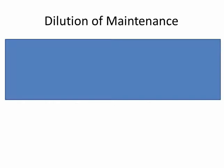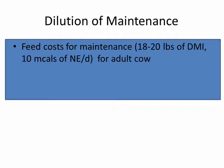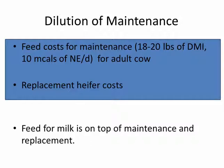What's important is this concept of dilution of maintenance costs. Every adult cow has feed costs for maintenance — 18 to 20 pounds of dry matter are essentially used to provide energy, approximately 10 Mcal of energy per day, for that adult cow just to move around and maintain herself before she produces any milk. We also have a replacement heifer being fed in other pens behind that adult cow. We can view these costs as fixed costs relative to milk production. Cows are then fed additional feed for milk production on top of these maintenance and replacement costs. Reproduction efficiency is going to dilute these maintenance and replacement costs ultimately over more pounds of milk.